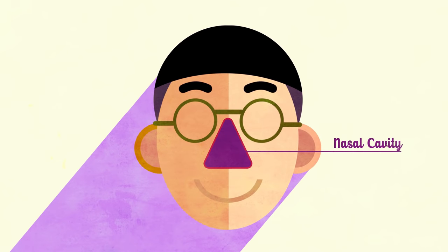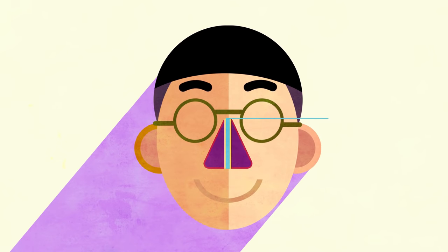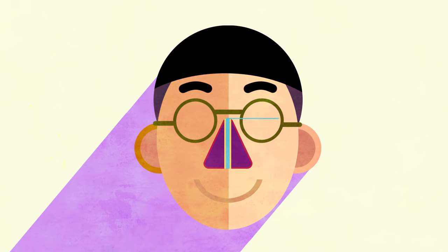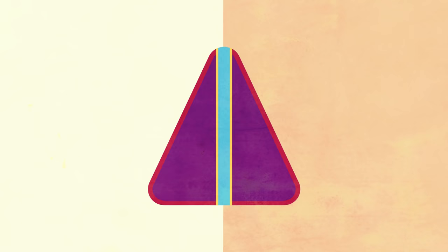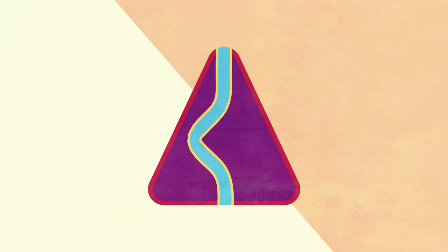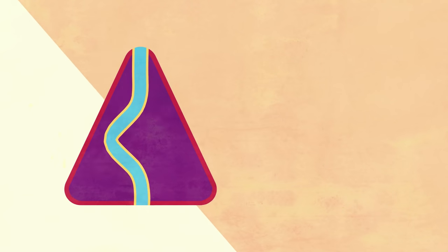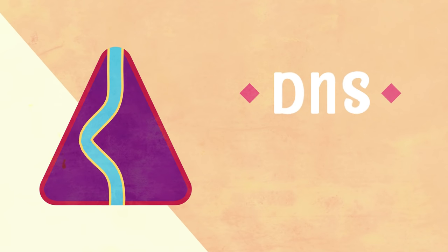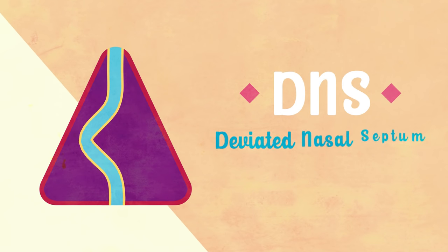The nasal cavity is divided into two by the nasal septum. Problems arise when it is not dividing symmetrically, leading to a condition known as DNS, or deviated nasal septum.